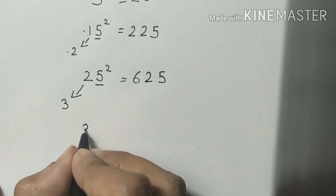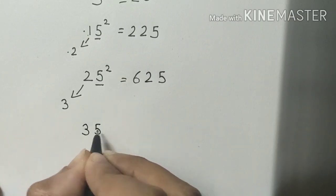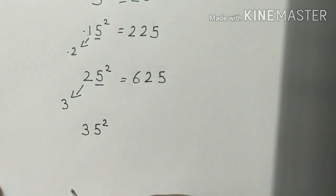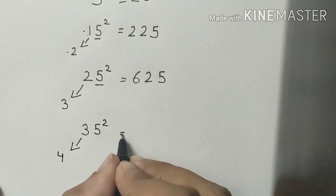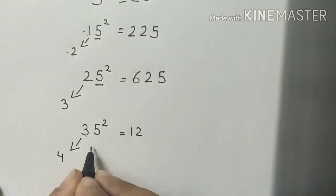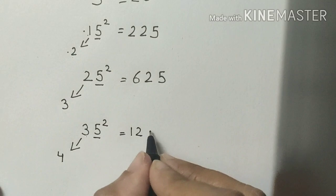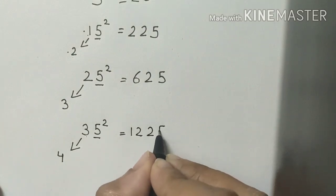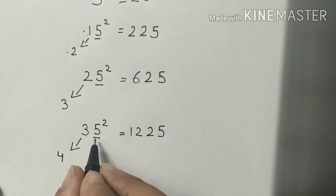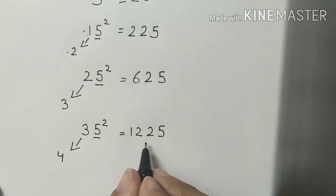Now let's calculate the square of 35. You can easily calculate it. What comes after 3? 4. So 4 × 3 is 12, and the square of 5 is 25. So the square of 35 is 1225.